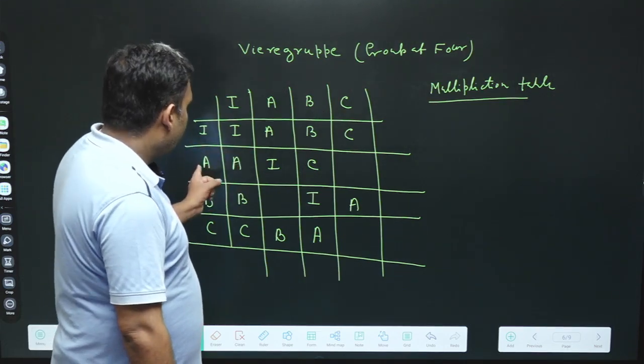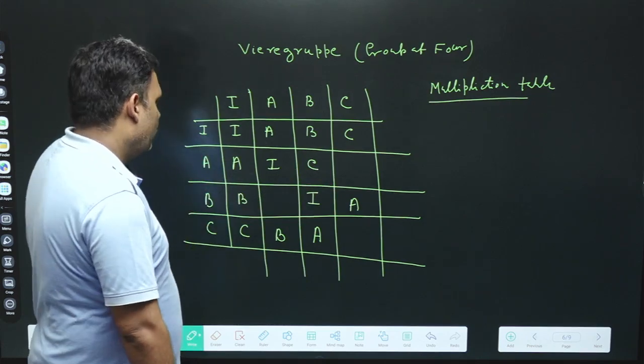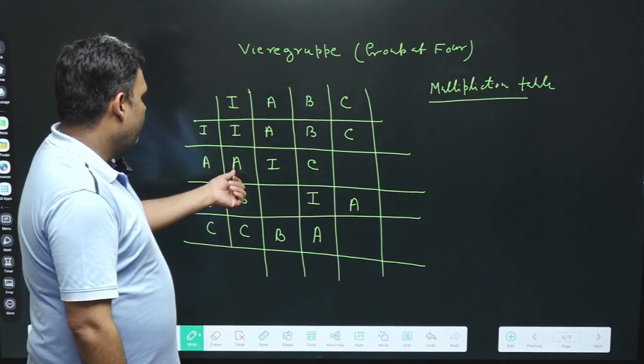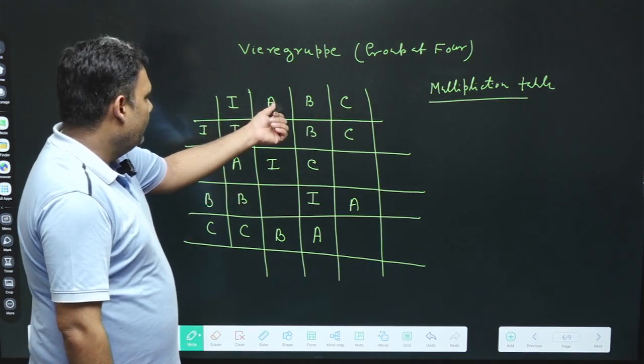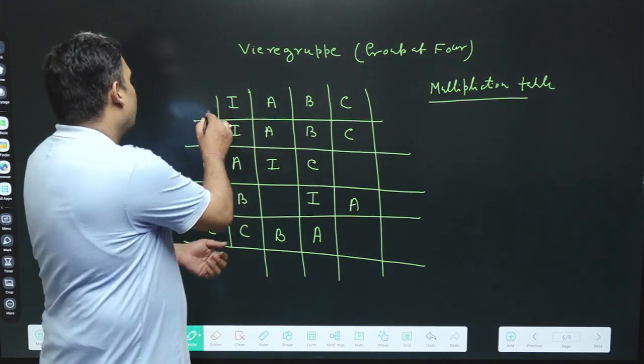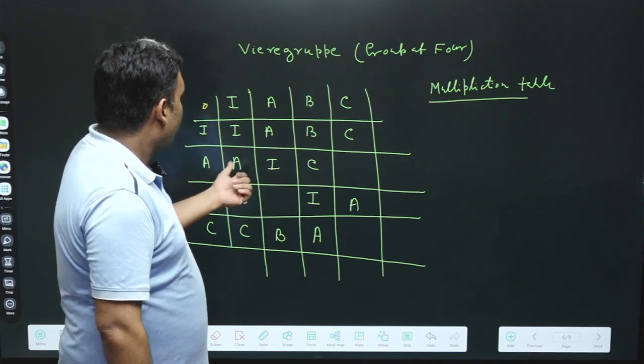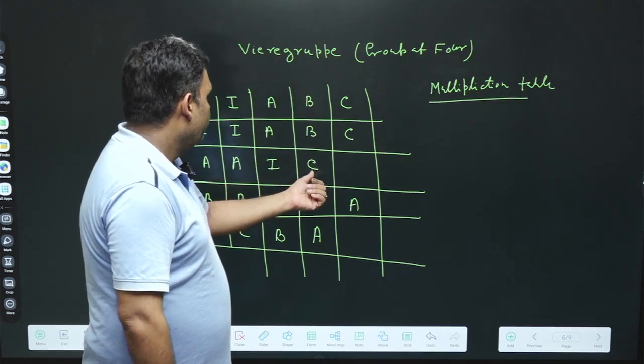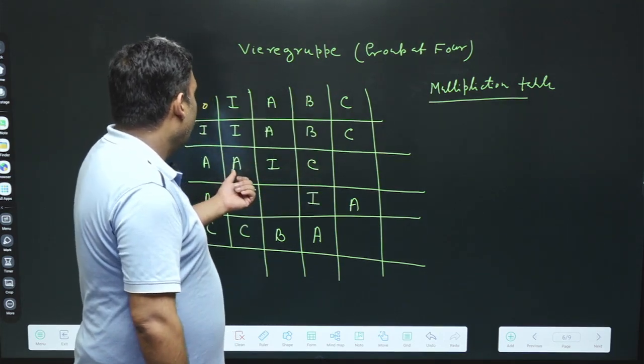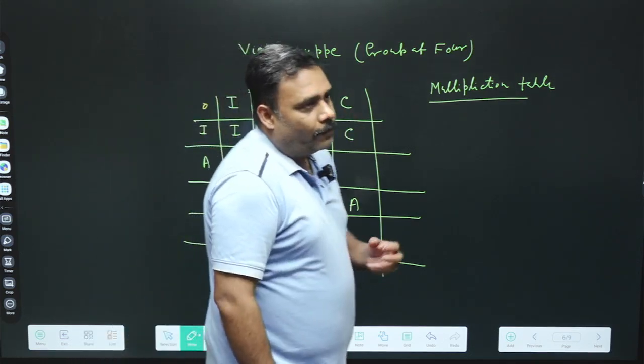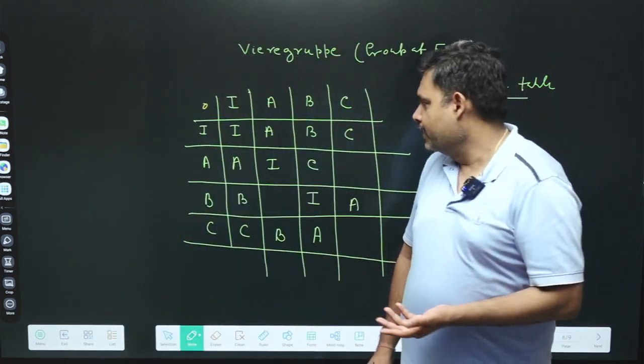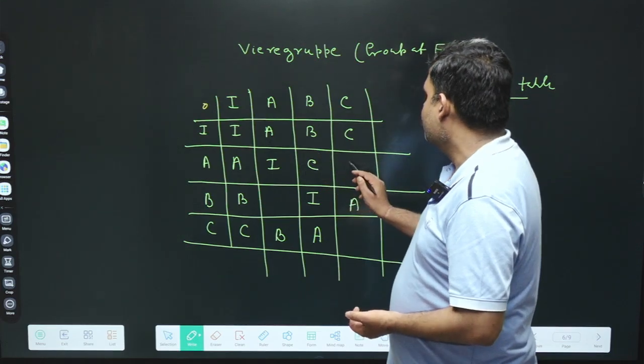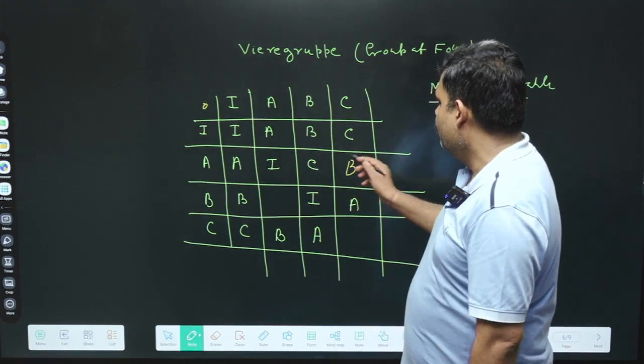Let's come to the second one and try to go for this. Here I, A is given, and A operation A is given as I, and A operation B is C. So what will be A operation C? We have to follow all the properties of the multiplication table. Either here A is there, I is there, C is there. So only B is missing, so this will be B.